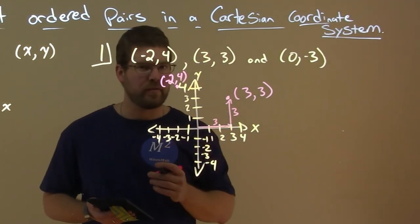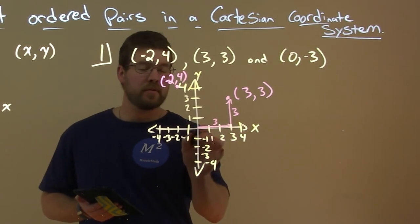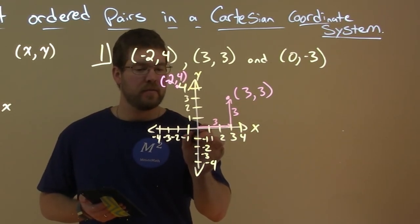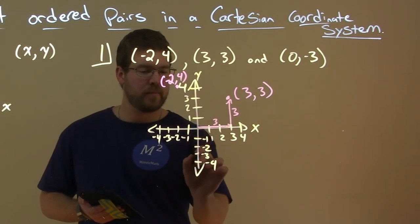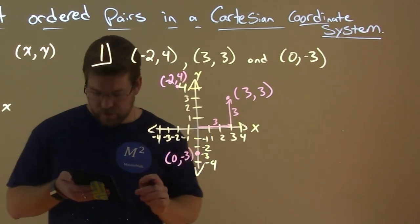Lastly, we have 0 comma negative 3, and this one's tricky. On the x-axis, we traveled 0 units, so it just stays there at the origin. But then it goes down 3 units on the y-axis. So 0 comma negative 3: 1, 2, 3. And there is the final point, 0 comma negative 3.